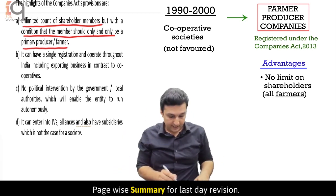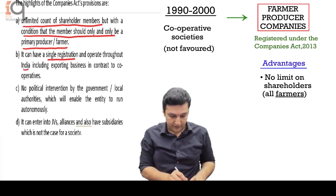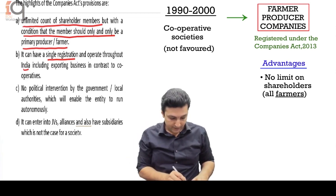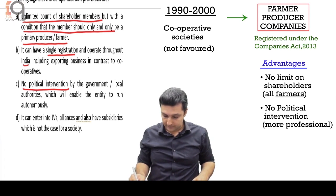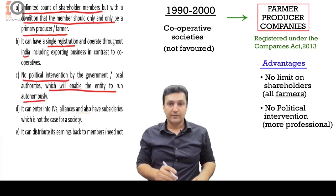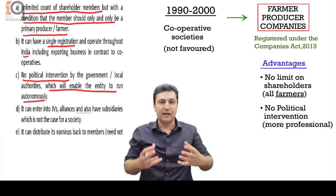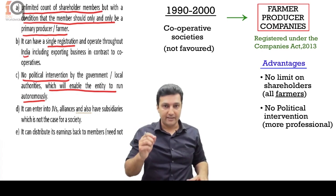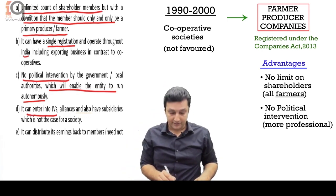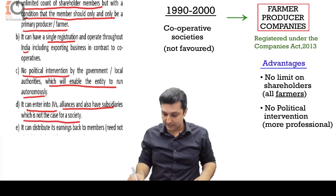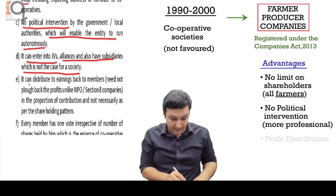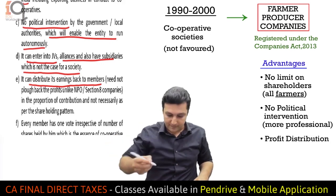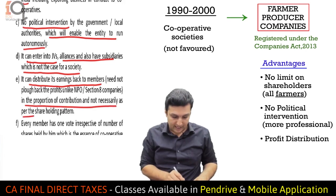You can have as many members as you want. It can have a single registration and operate throughout India including exporting business, in contrast to cooperatives which have their own restrictions and no exports. There is no political intervention by the government or local authority, enabling the entity to run autonomously — wherever there is government interference there will be delays, red tapism and slow work. It can enter into joint ventures, alliances, and also have subsidiaries, which is not the case for a society. It can distribute its earnings back to its members and does not need to plow back profits — distributions are in proportion to contribution and not necessarily as per shareholding pattern.